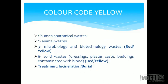Color code Yellow: includes human anatomical waste, animal anatomical waste, microbiology and biotechnology waste, and solid waste such as dressings, casts, and beddings contaminated with blood. Everything infectious goes into yellow. Blood, infection, organ, tissue — all go in the yellow bag. Treatment is incineration or burial.